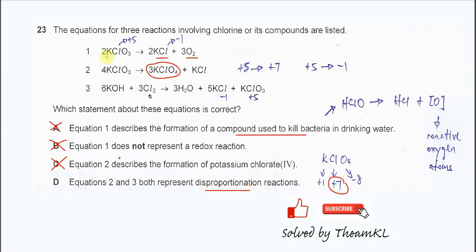For reaction 2, chlorine from positive 5 is oxidized to positive 7 here. And the chlorine also reduces to negative 1. So from positive 5 to positive 7 is oxidation.